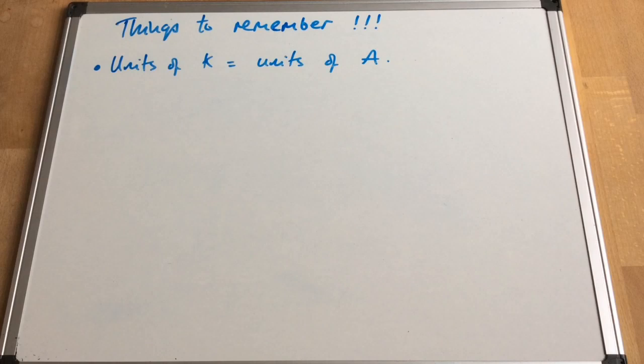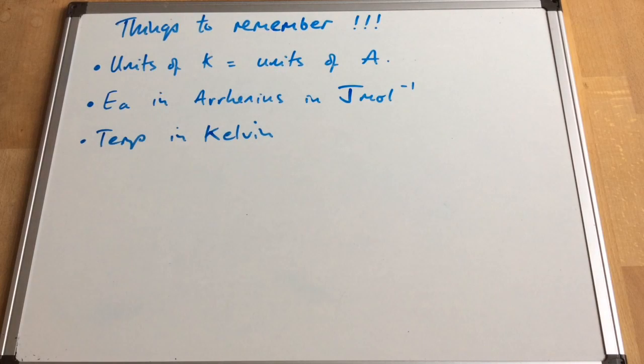The units for the activation energy in the Arrhenius equation are always in joules per mole. And so you would typically have to convert to kilojoules per mole if you're being asked to calculate the activation energy. And your temperature needs to be in Kelvin. So if they give you a degree Celsius temperature in the question, you need to add 273 on to get it into Kelvin.